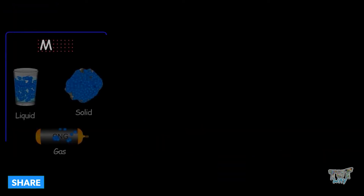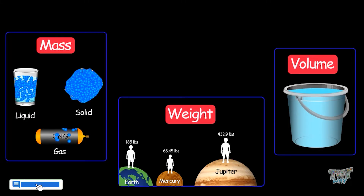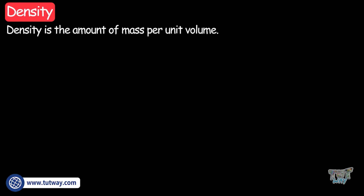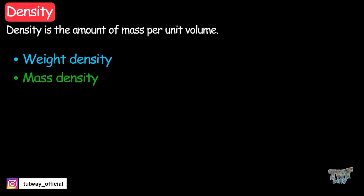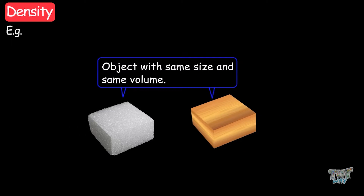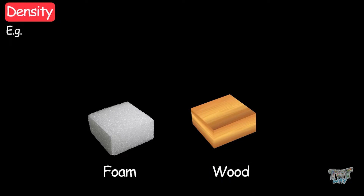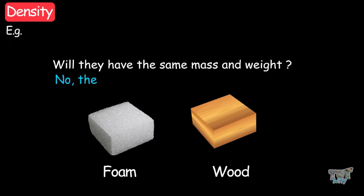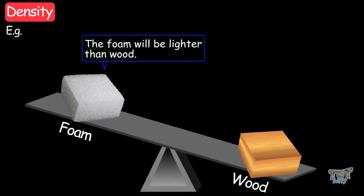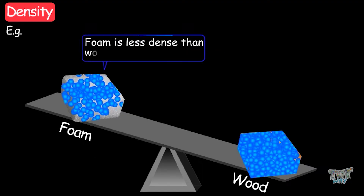Now we have learned about mass, weight, and volume. Now it's time to learn about density. Density is the amount of mass per unit volume. There are two types of density — weight density and mass density — but we will be commonly using mass density. Let's try to understand this concept with examples. Here we have two objects of the same size and same volume: a piece of foam and a piece of wood. Will they have the same mass and weight? No. The foam will be lighter than the wood. Why? It's because foam is less dense than wood.